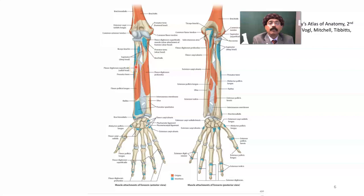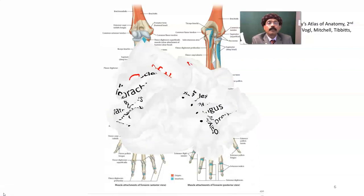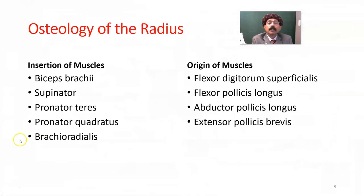Summary: there are four muscle origins from the radius — flexor digitorum superficialis, flexor pollicis longus, abductor pollicis longus, and extensor pollicis brevis. There are five muscle insertions — biceps brachii, supinator, pronator teres, pronator quadratus, and brachioradialis.